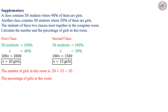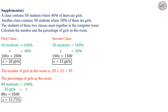The percentage of girls in this room: we have 80 students, they constitute 100%, and we have 35 girls, they constitute x. Then 80x equals 3500, then x equals 43.75%.